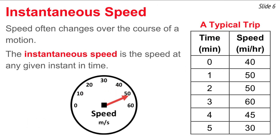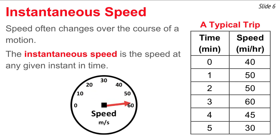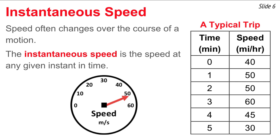Now we contrast instantaneous speed and average speed. Have you ever noticed watching your speedometer over the course of a trip? It's going all over the place — speed is seldom constant, it's changing over the course of a motion. In any given instant in time, whatever the speedometer reads, that's what we refer to as your instantaneous speed — the speed at any given instant in time. Looking at the data table, you'll notice all sorts of speeds taken on a trip to school for the first five minutes of travel, recorded at every one-minute interval.